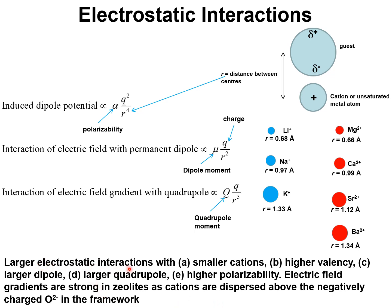In other words, larger electrostatic interactions are achieved with smaller cations because the center to center distance is smaller. If the radius of the extra framework cation is smaller.